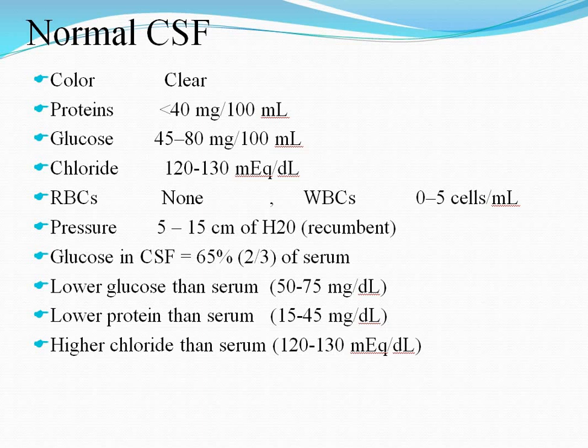WBCs are 0–5 cells per ml, and pressure is 5–15 cm of water. In the recumbent position, glucose in the CSF is 65% of the serum. One must remember that lower glucose and lower protein are present than in serum, but higher chloride. This will help in investigation for confirming the CSF leak.